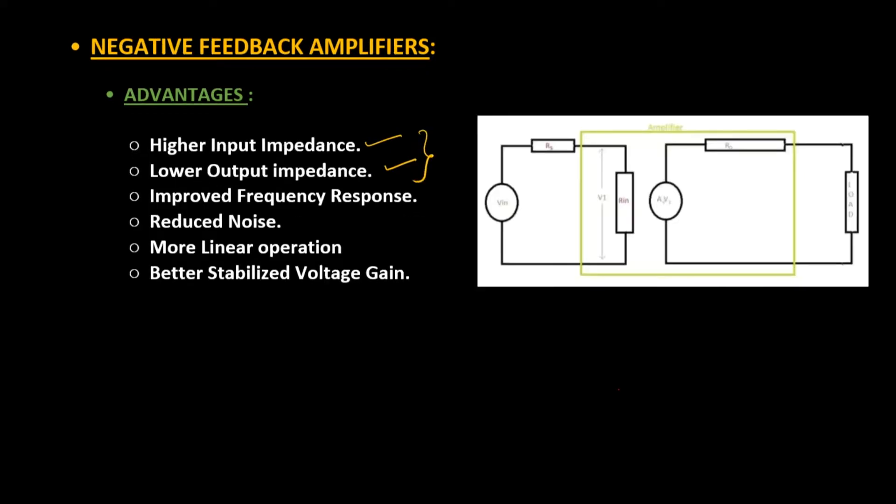This is the equivalent circuitry of an amplifier in which both input section and output section are separated. Vin is the input potential. At the output we have a load. Rs is the impedance or resistance of source. Rin is the input impedance of transistor or amplifier circuit, and R0 is the output impedance of this network or amplifier.